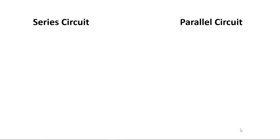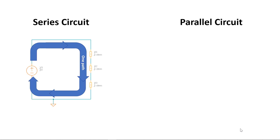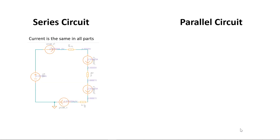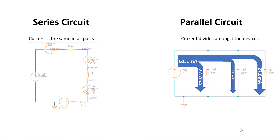Let's review what we've learned by comparing and contrasting series and parallel circuits. Series circuits have one path for current; parallel circuits have more than one path for current. Current is the same in all parts of a series circuit, while current divides amongst all the devices in a parallel circuit. In a series circuit, IT equals I1 equals I2 equals I3 and so on. In a parallel circuit, IT equals I1 plus I2 plus I3 and so on.